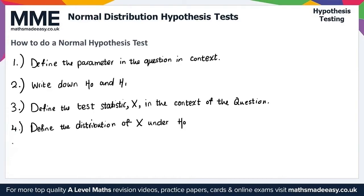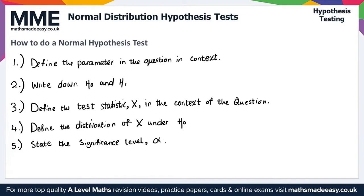Step five: we state the significance level. Even though you would likely be given this in the question, we wouldn't want to risk not stating it, as we could potentially lose a mark. We use the Greek letter alpha to represent the significance level.